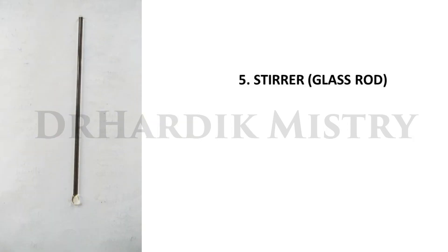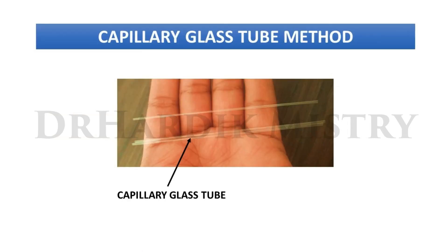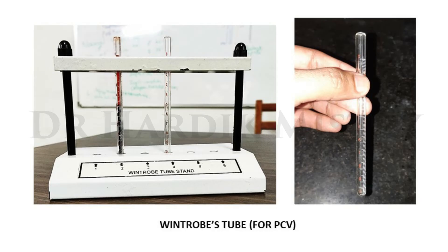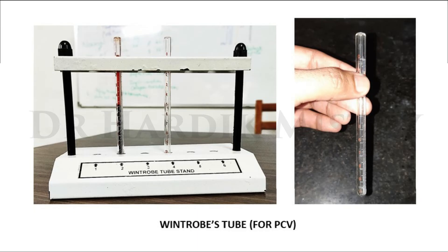A stirrer or glass rod is used for mixing purposes. Clotting time will be performed with the capillary glass tube method. This is the Westergren pipette for ESR — it is open from both ends. This is the Wintrobe tube for PCV — it is closed at one end and open at the other.